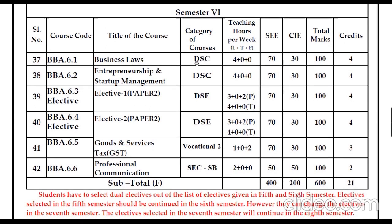In the sixth semester, the first core subject is Business Law and the second is Entrepreneurship and Startup Management. For discipline electives, if you have already selected Elective 1 as Finance and Elective 2 as Retailing, you need to study the second papers of Finance and Retailing. The occasional paper covers GST (Goods and Services Tax), and the SEC is Professional Communication.